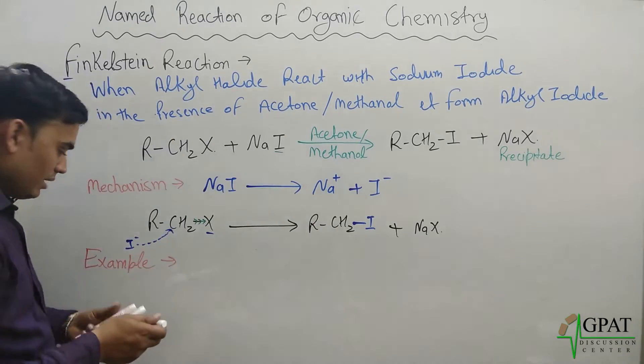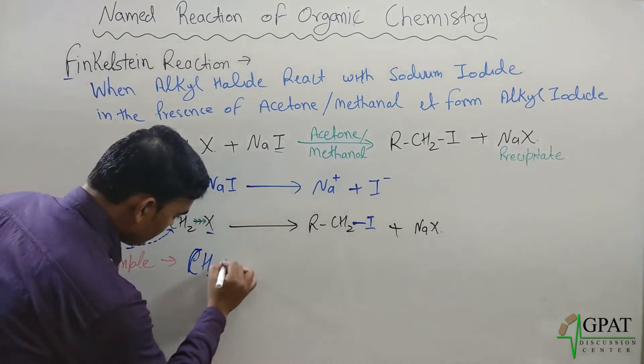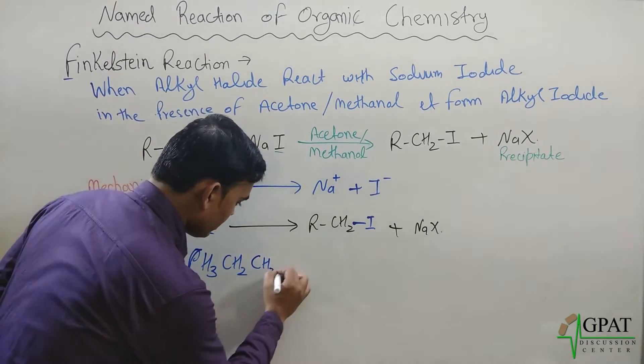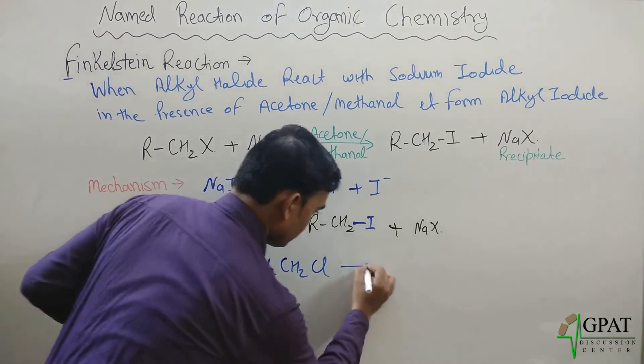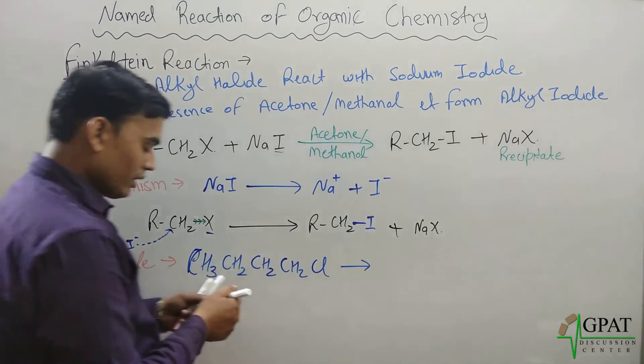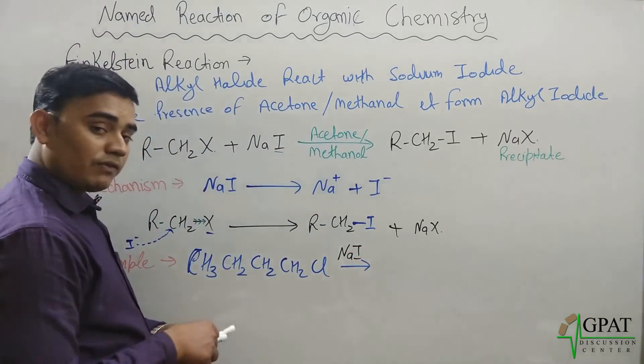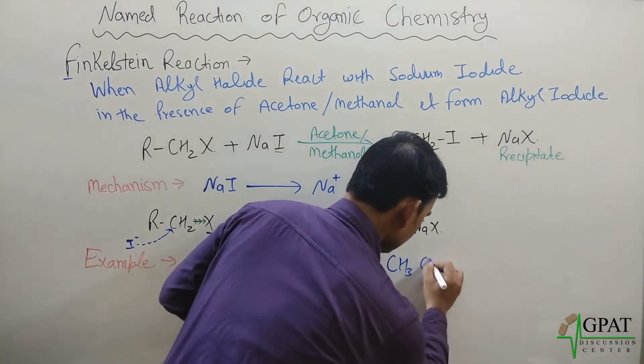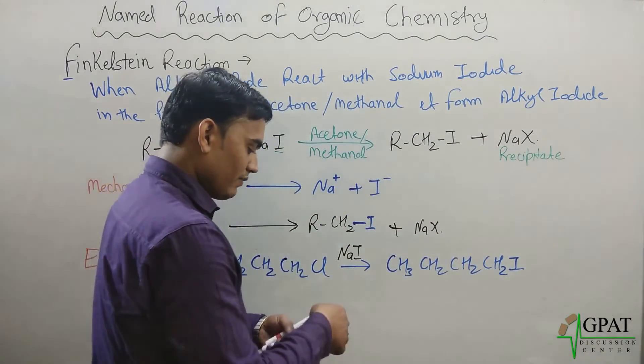Suppose we take an example. Simply, what happens? Suppose I am taking CH3-CH2-CH2-CH2. What is this? N-butyl chloride. This n-butyl chloride when reacts with sodium iodide, then what will form? N-butyl iodide. The resultant product will be CH3-CH2-CH2-CH2-iodine, as well as what will get removed out?